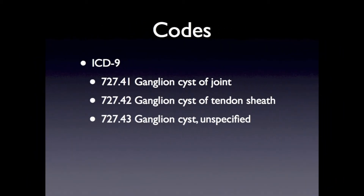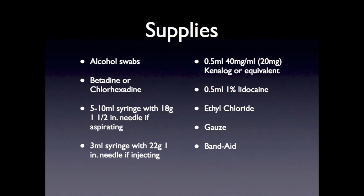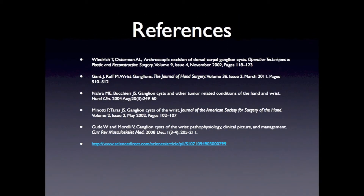The ICD-9 and CPT codes needed to document the procedure for the visit encounter are listed. This is a summary slide reviewing the needed supplies for a ganglion cyst aspiration, followed by a summary slide describing the technique. We hope you've enjoyed this presentation on ganglion cyst aspiration.